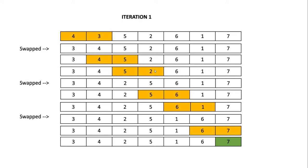Next we compare 5 and 2 — 5 is greater, so we swap. Then 5 and 6 — no swap required. Then 6 and 1 — 6 is greater, so we swap to get 1, 6. Then 6 and 7 — no swap required. This is the end of iteration 1. We know that 7 is the largest element and it has been correctly placed at the rightmost end of the array, so it does not need to be compared in the next iteration.